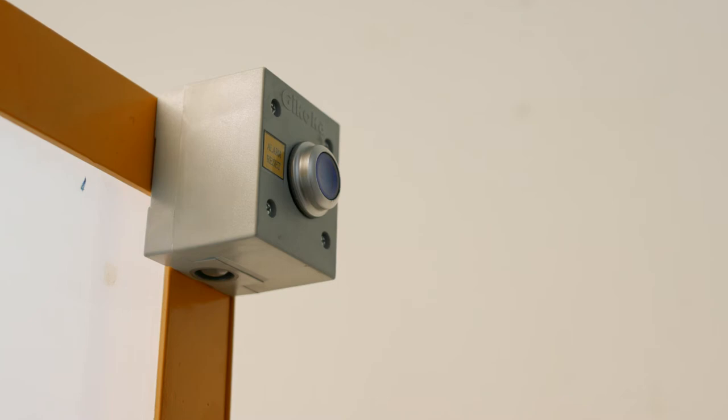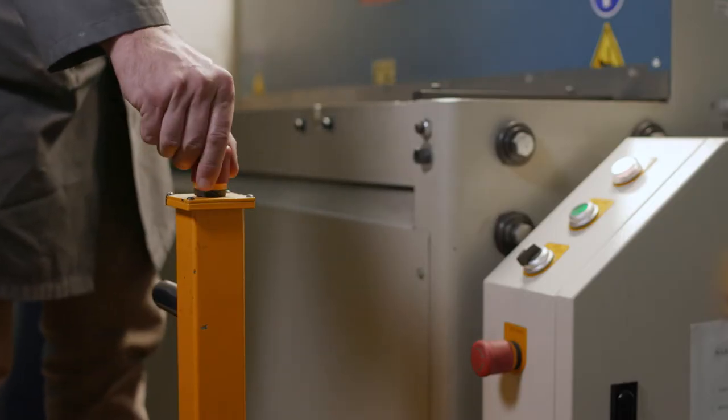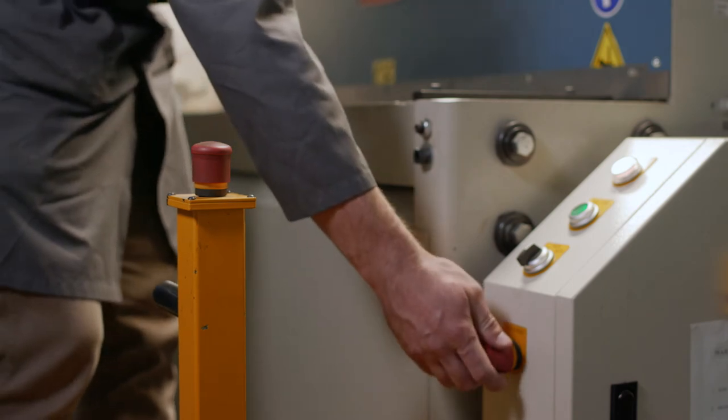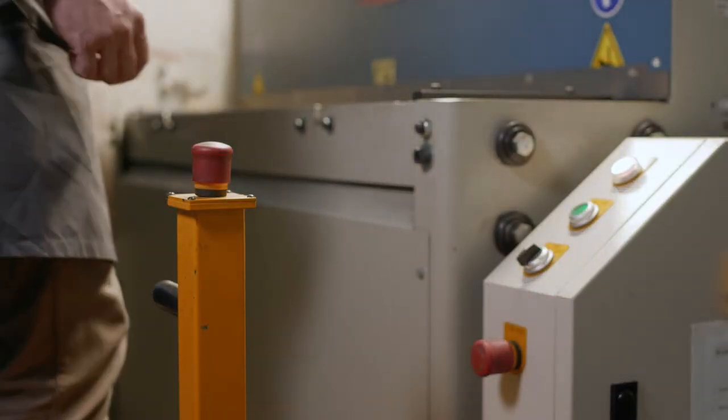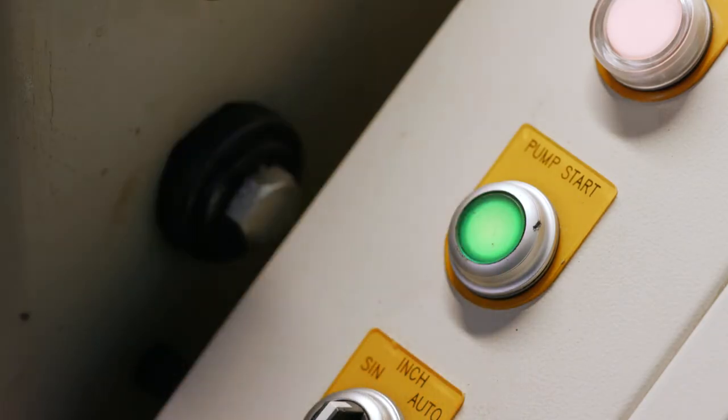To start the guillotine make sure that both emergency stops have been released. Then press the blue button to release the light guard and then press the green button on the front of the control panel. If you've followed these steps correctly you'll hear a loud hydraulic pump start running.